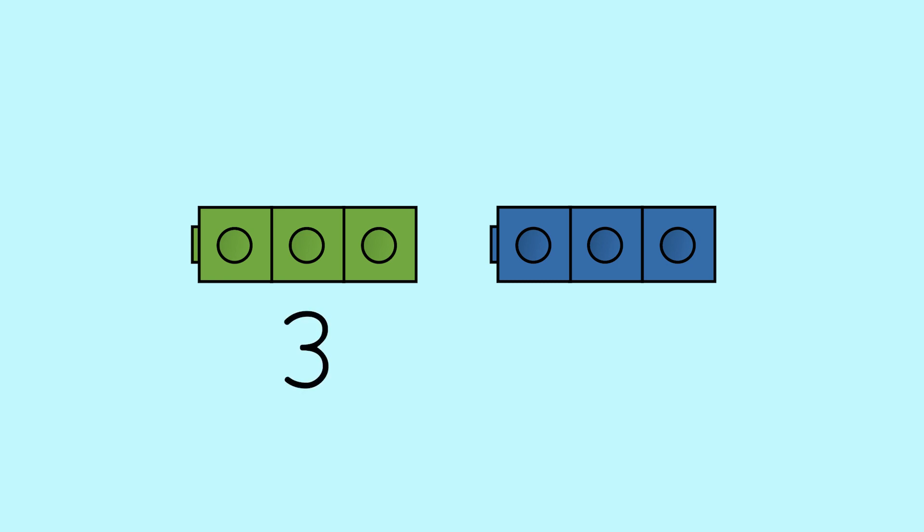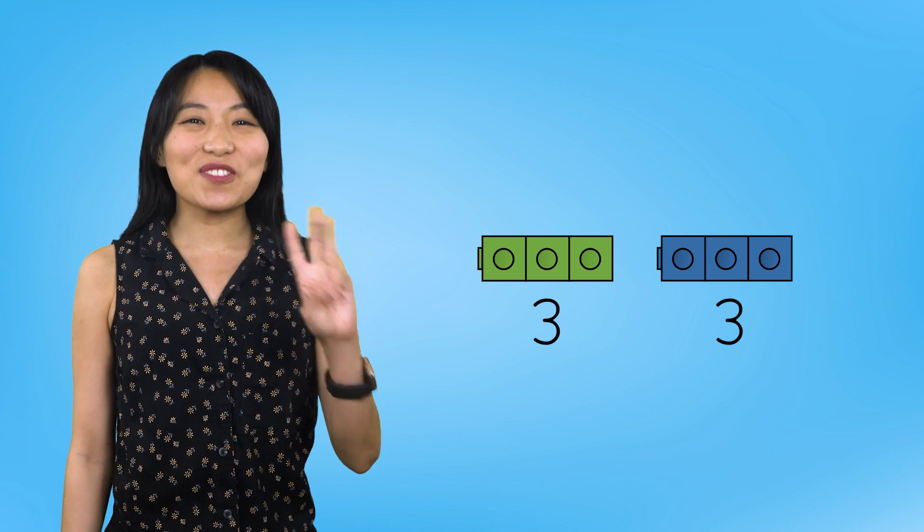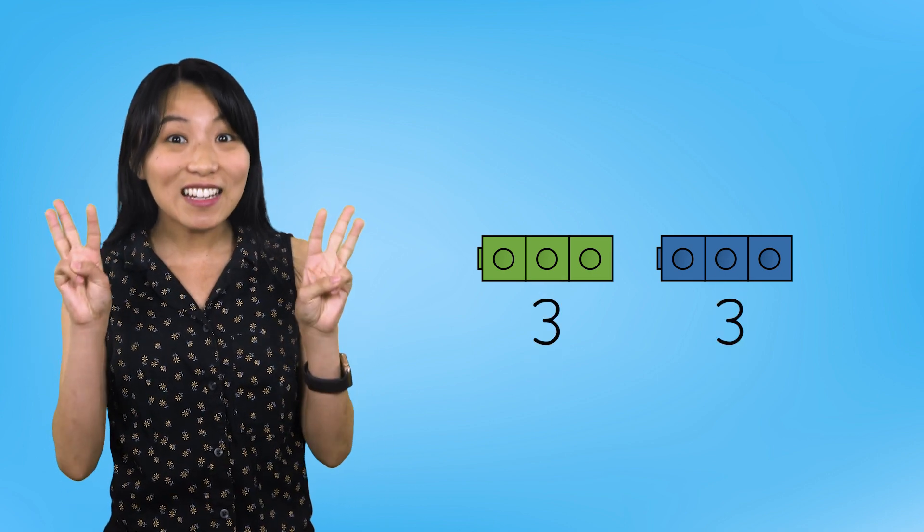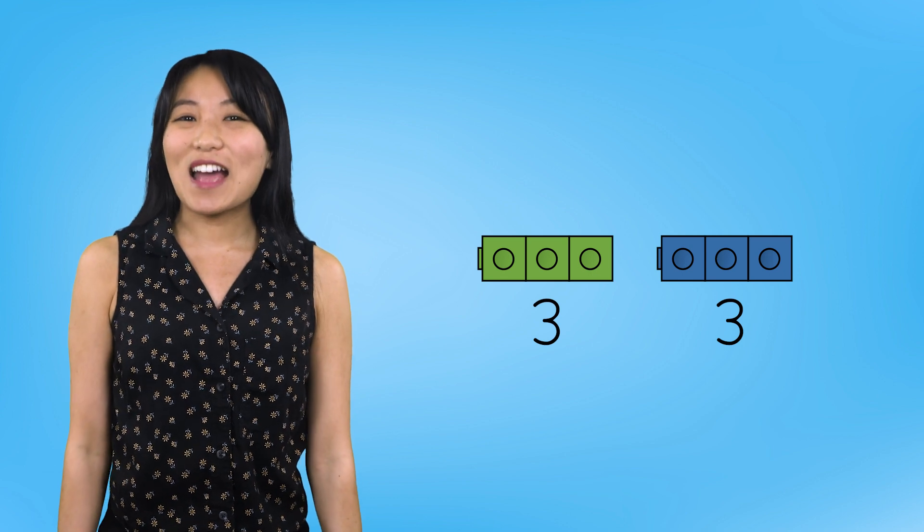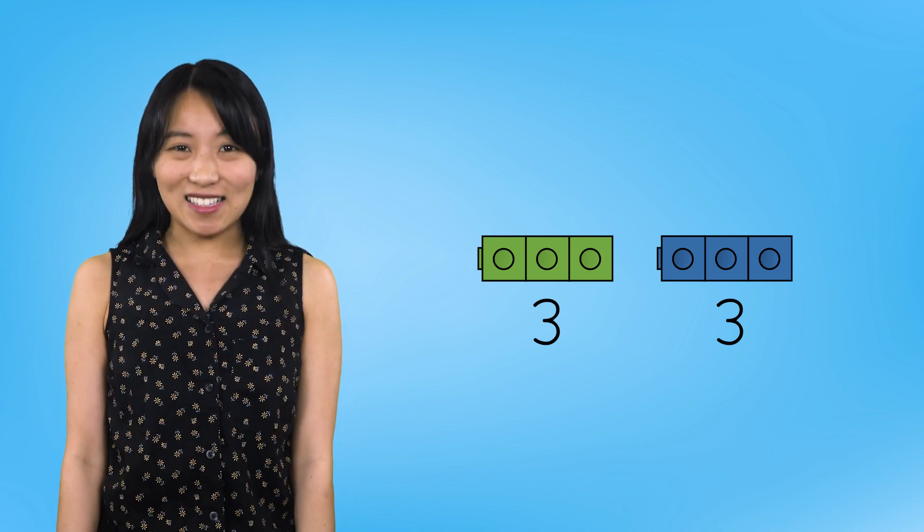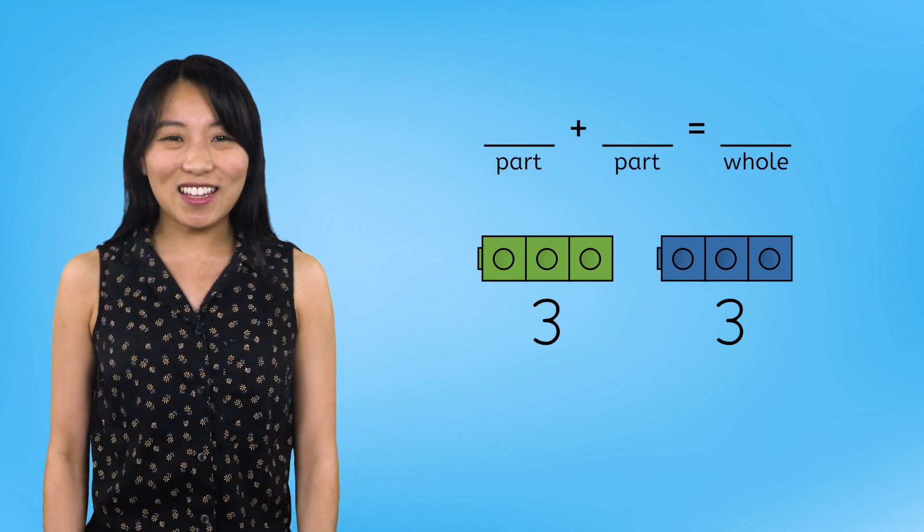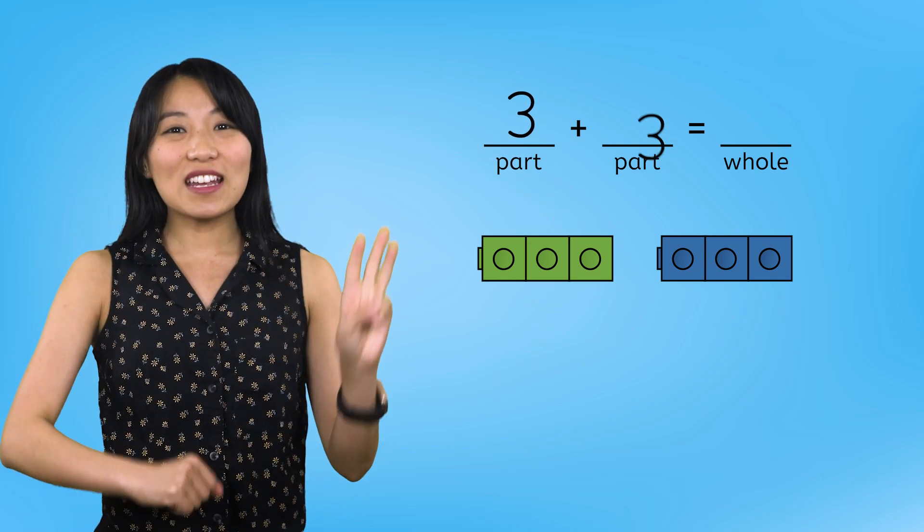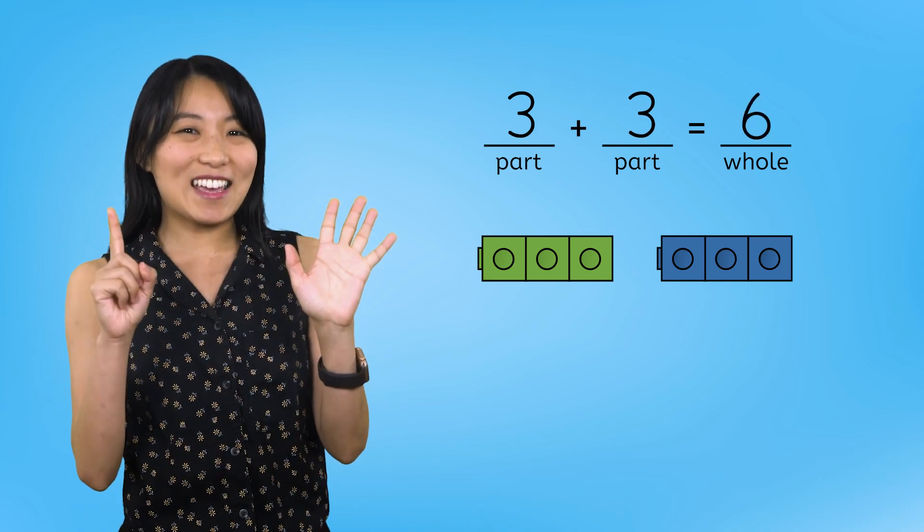3 cubes are in the first part, and 1, 2, 3 cubes in the second part. We found our 3rd way to make 6, and both parts are 3. Time to write our number sentence. What do you think it is? 3 plus 3 equals 6.